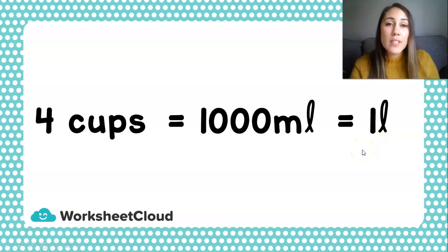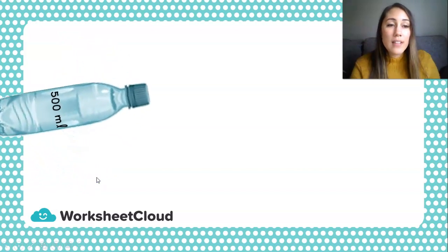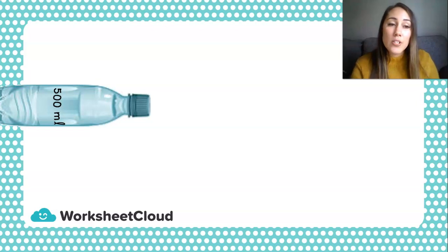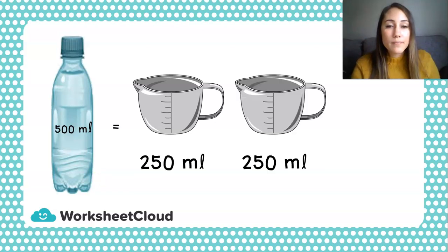You might have heard this already because you might have seen a one liter bottle of water or a one liter of cool drink. So, one liter is four cups. Here's a water bottle that we might have all seen or drunk from before, and this has 500 milliliters of water inside. If I tip this bottle over, how many cups makes 500 milliliters? Yes — two cups. So if I needed to fill cups, I would be able to fill two cups with 500 milliliters, and they would each be 250 milliliters.